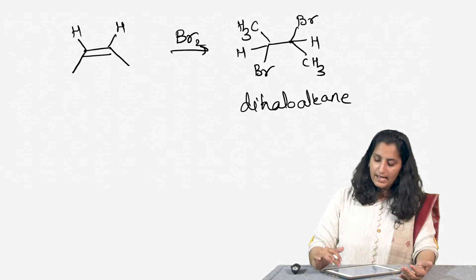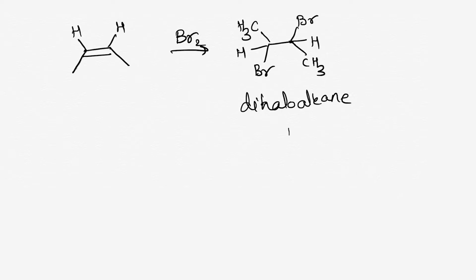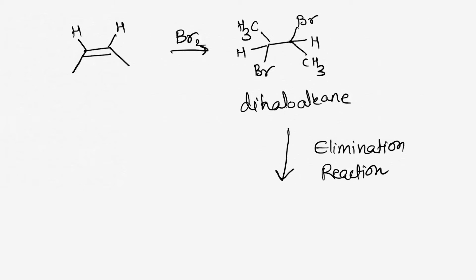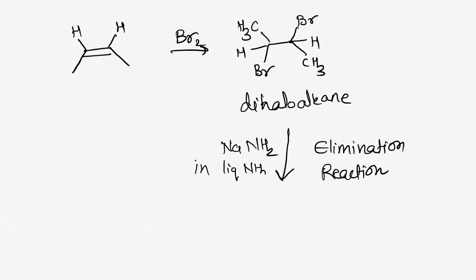This particular vicinal dihalide can undergo a reaction called an elimination reaction. This dihaloalkane can undergo two successive dehydrohalogenation reactions such that in the presence of a really strong base like NaNH2 in liquid ammonia, it can form the corresponding alkyne.